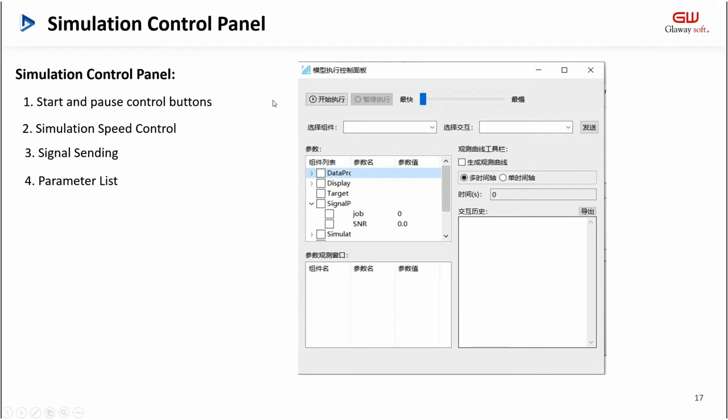The simulation control panel is shown in the figure. The simulation panel is mainly composed of seven parts. The first part is the start and pause control buttons. It has four functions: start, cancel, pause, resume, and cancel the simulation. The second is the simulation speed control button. The user can adjust the speed of the simulation execution by dragging. The third is the send signal control button. The user can send a signal to the component by selection.